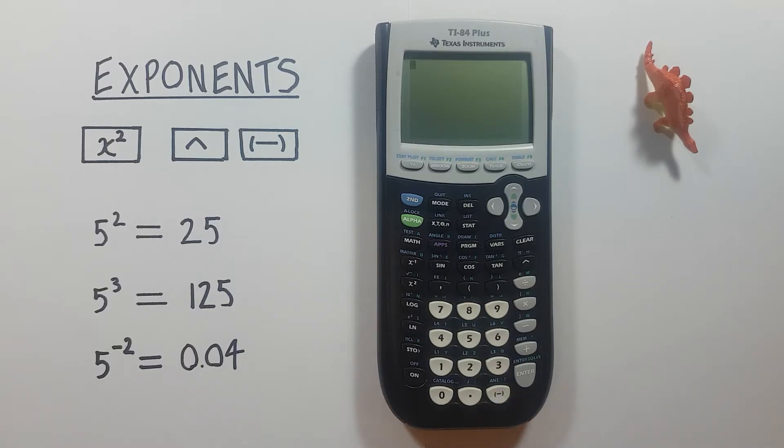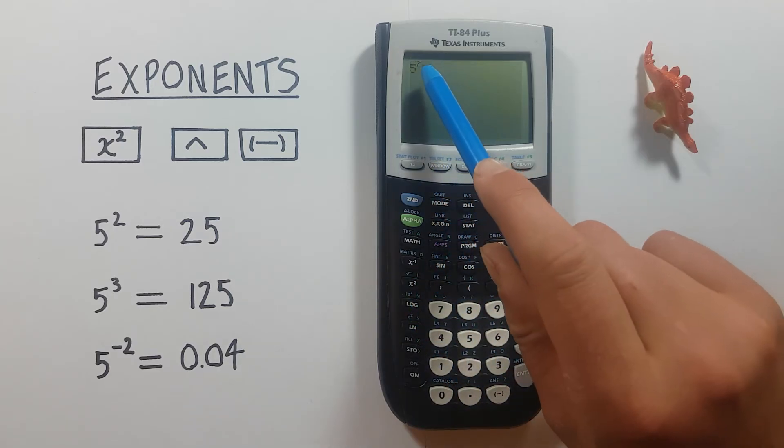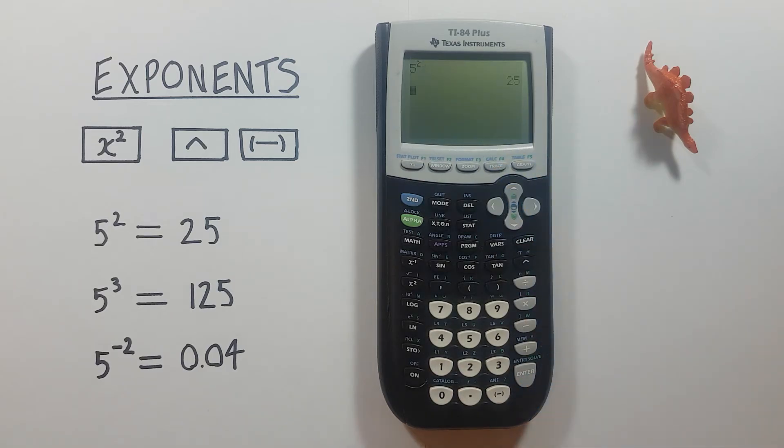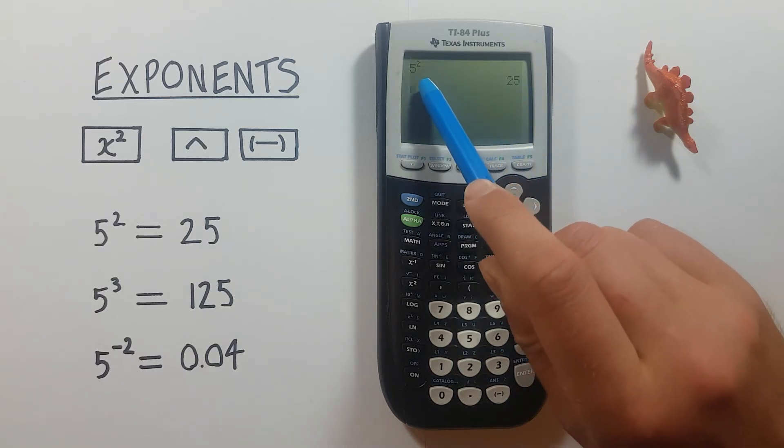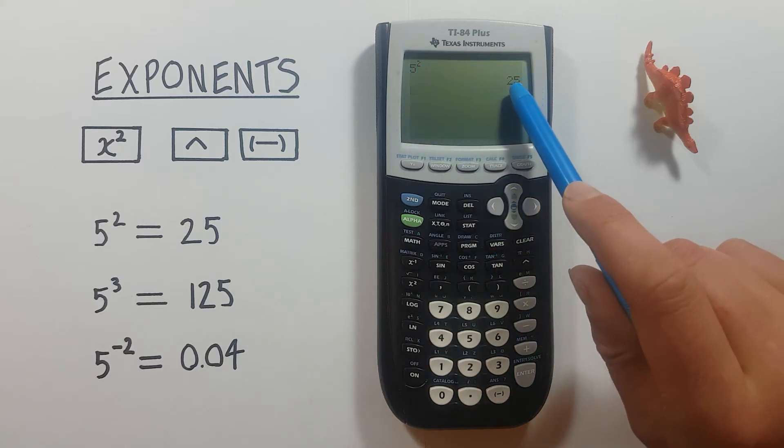Getting started, if we just want to square a number, like say 5 squared, we start by entering the number and then hitting the x squared key. You'll see we have an exponent of 2 now and we press enter and we get the result of 5 squared or 5 to the power of 2 equals 25.